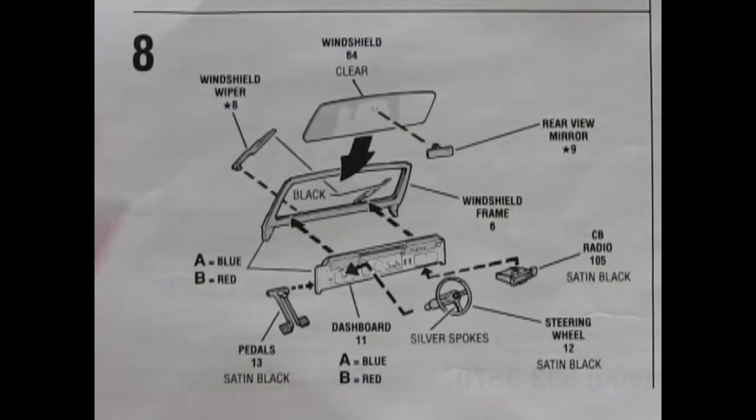Panel 8 shows the dashboard and windshield of our Jeep. You get windshield wipers, rear view mirror, the clear windshield, pedals, dashboard, the steering wheel and a CB radio. What else could be more 70s?